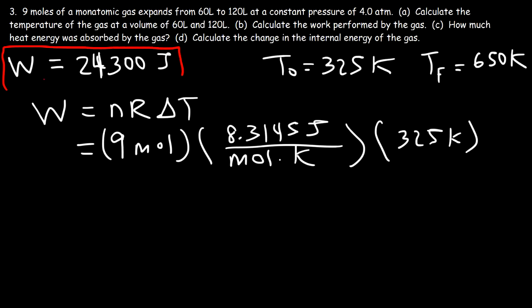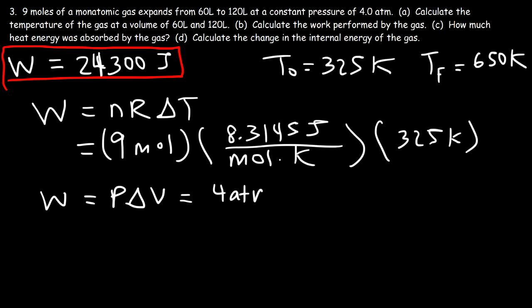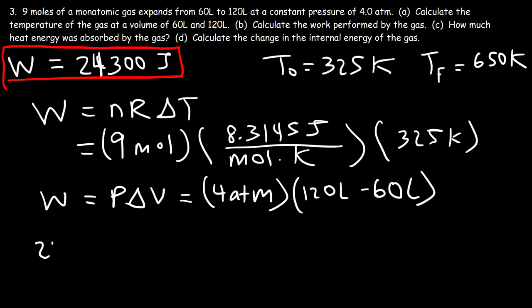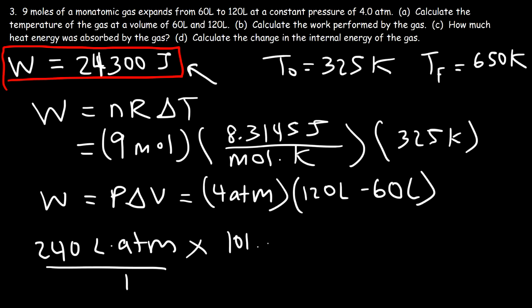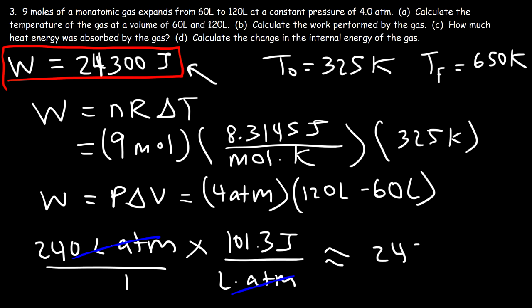We can also calculate work using W = P ΔV. Pressure is 4 atm, and the change in volume is 120 − 60 = 60 liters, so W = 4 × 60 = 240 liter·atm. Converting to joules using 101.3 joules per liter·atm: 240 × 101.3 gives approximately 24,300 joules — the same answer.